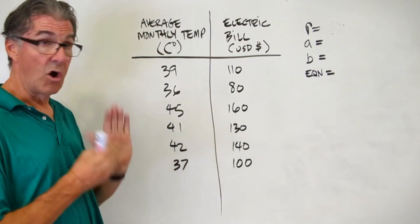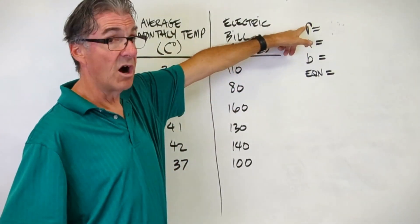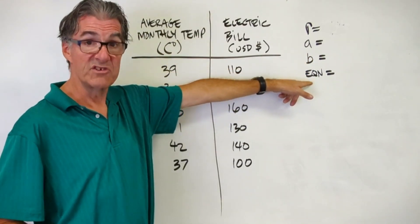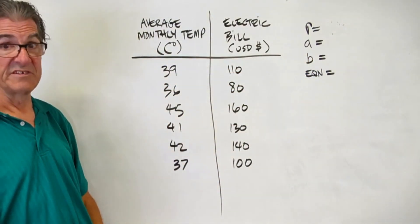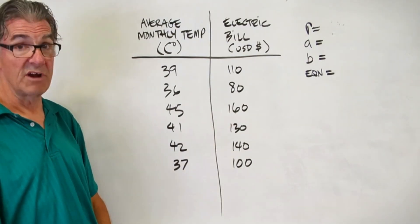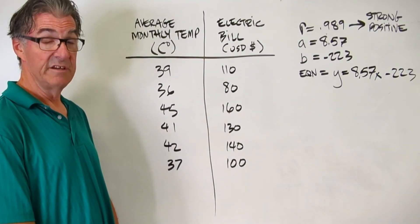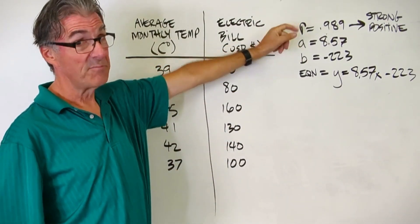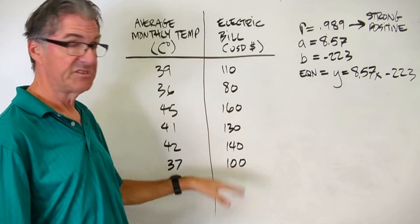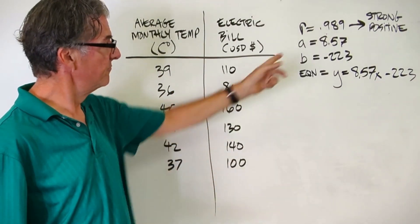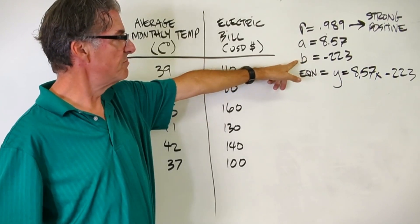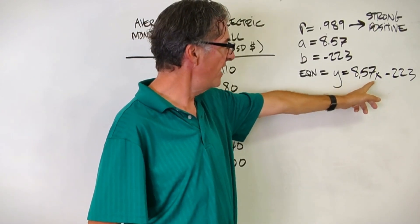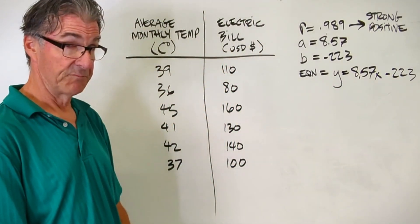So what I want you to do is pause the video and do the whole thing. I want you to find your r value, your correlation coefficient. I want to find your a and your b, and then write your equation of best fit for this. Actually, it's not best fit, it's a least squares regression line. Let's see how you did. So my r value, 0.989, that's a strong positive correlation. No problem using this data to make predictions. My a is 8.57, my b is minus 223. And my equation is y equals 8.57x minus 223.